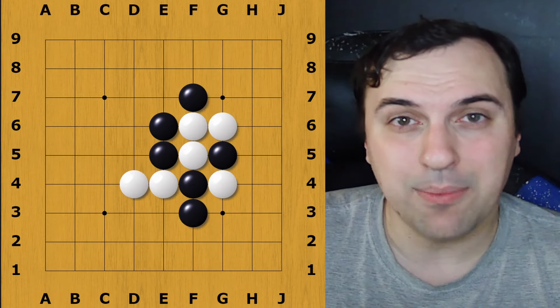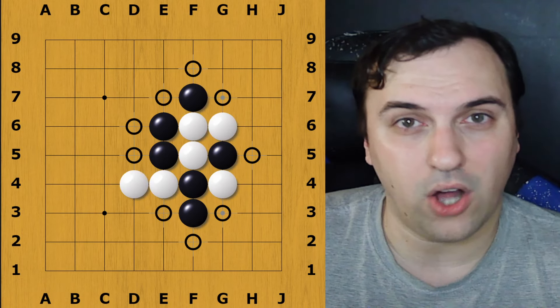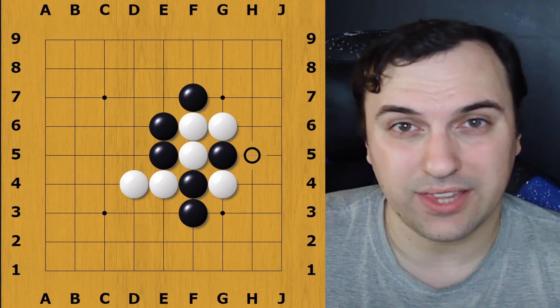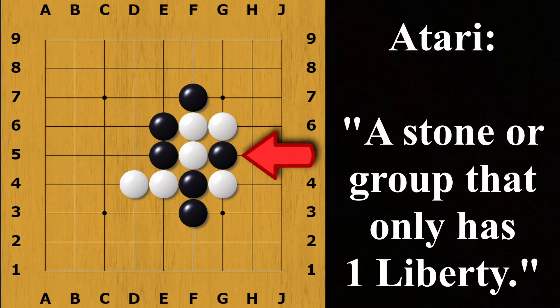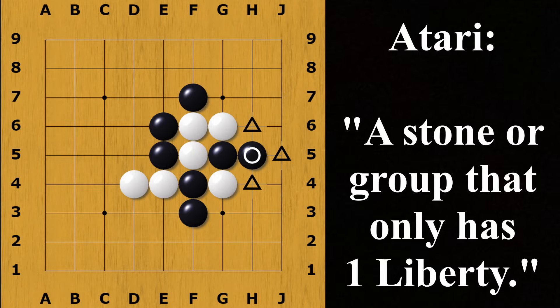When starting out in Go, a good habit to practice is to count the liberties on all of your groups. If any group has one Liberty, we call this Atari. If you see a group in Atari, you should try to connect to it and save it by gaining more liberties.